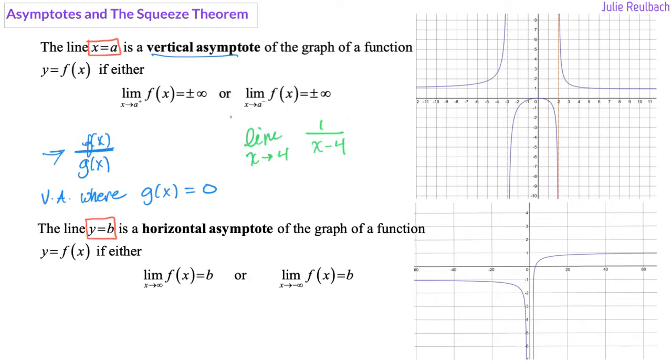For instance, in this picture right here, this x minus 4 will not cancel out, and so you would have an asymptote at 4. Well, let's look at the graph and see what this does to limits.